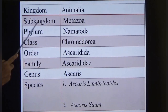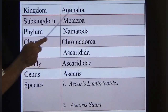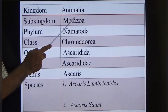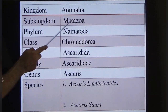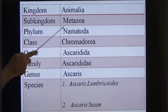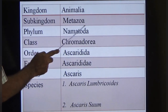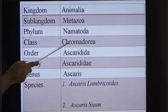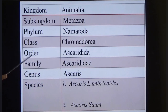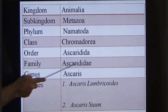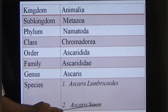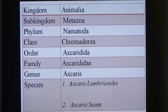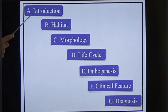In taxonomy, Ascaris lumbricoides belongs to Kingdom Animalia, Subkingdom Metazoa — all worms (helminths) fall under Metazoa. Phylum Nematoda, Class Chromadorea, Order Ascaridida. There are two species: Ascaris lumbricoides (most commonly infecting humans) and Ascaris suum.